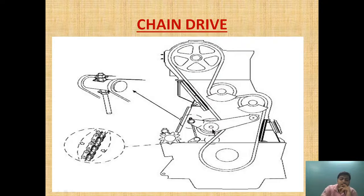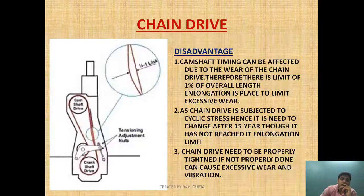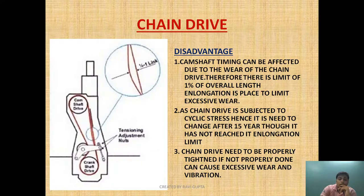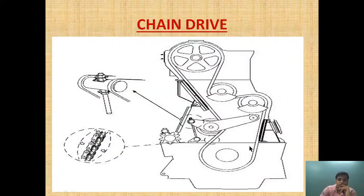After 15 years we need to change the chain drive irrespective of its condition — similar to a connecting bolt of a four-stroke engine which must be changed after a specific running period, because both are subjected to cyclic stress. Also, the chain drive needs to be properly tensioned; if not done correctly it can cause excessive wear and vibration. The adjustment nut provided must be set correctly to avoid severe vibration.